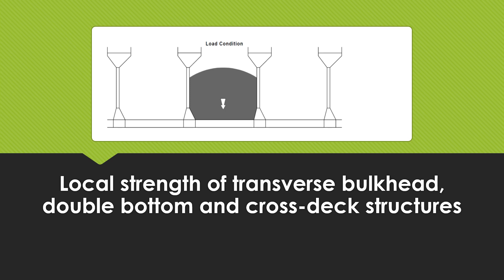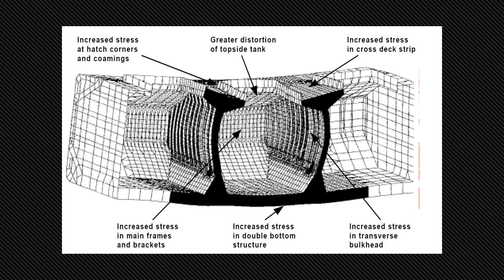To enhance safety and flexibility, some bulk carriers are provided with local loading criteria which define the maximum allowable cargo weight in each cargo hold and each pair of adjacent cargo holds — the block hold loading condition — for various ship draft conditions. Local loading criteria are normally provided in tabular and diagrammatic form. Overloading will induce greater stresses in the double bottom, transverse bulkheads, hatch combings, hatch corners, main frames, and associated brackets of individual cargo holds. These structural configurations are sensitive to the net vertical load acting on the ship's double bottom — the difference between the vertical downward weight of the cargo and ballast water and the upward buoyancy force dependent on the ship's draft.